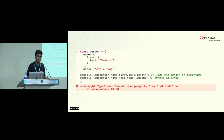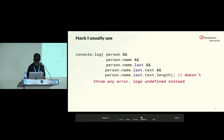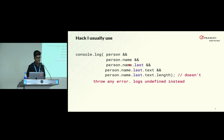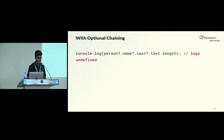So it throws an error, and to handle it I personally check each property until the last property to see if it exists. I check first name, then see if there is a last property in that, and if there is a text property in last — then I calculate the length. At any point if some property doesn't exist, like last in this case, it doesn't throw an error, it just logs undefined. But with optional chaining, there's a new question mark dot operator available in JavaScript. I can use it in one line and it doesn't throw any error anymore.